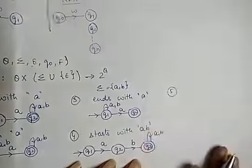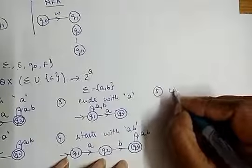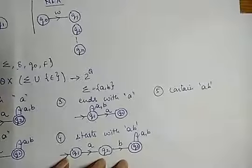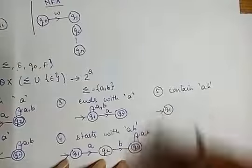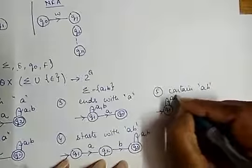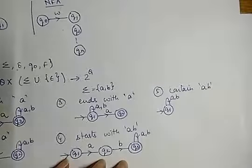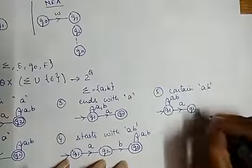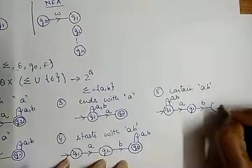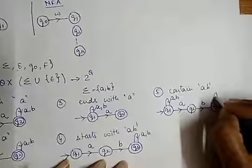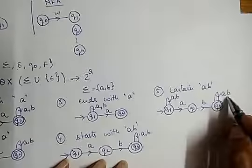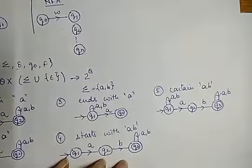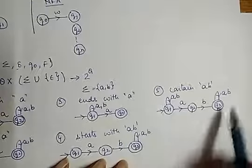Fifth example: I have to draw an NFA for all strings which contain AB. It's similar to the second example containing A. If Q1 is the initial state, I don't care what comes at the beginning — it can be A or B. But it must contain A, so it moves to Q2, then B comes and it moves to the final state Q3. I don't care what comes at the end — either A or B.